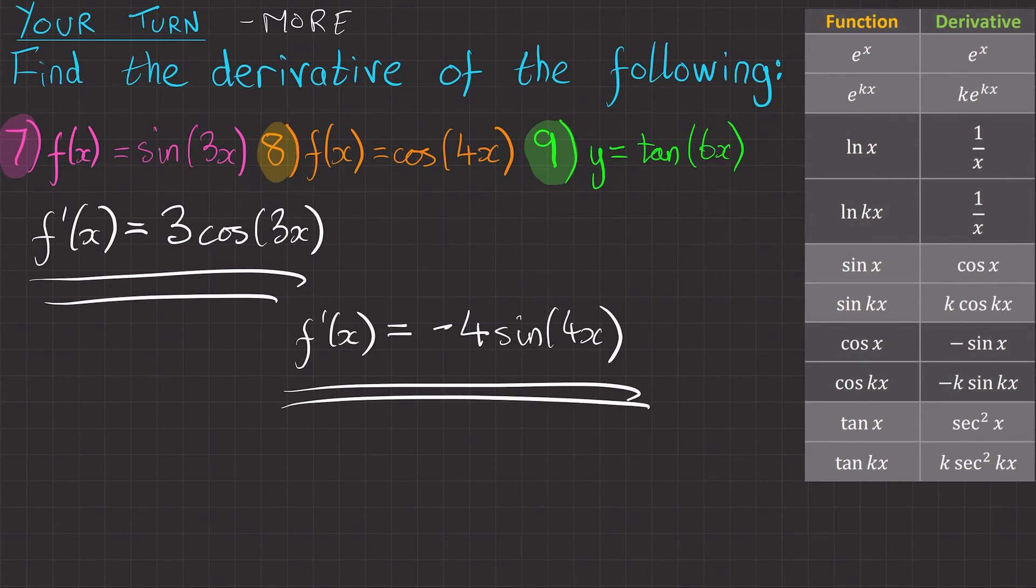Question nine is the fun one because it's got tan involved. We've got y equals tan 6x. So looking down the table of functions, we've got tan x and tan kx. We want tan kx because we've got a constant involved. So the derivative of this is k sec squared kx.